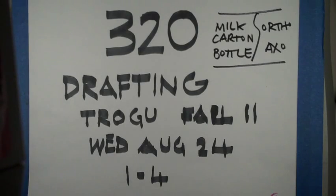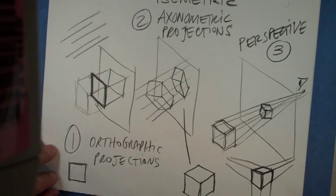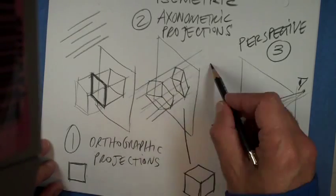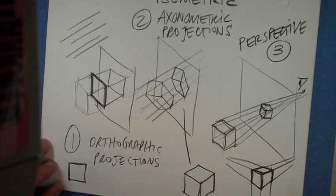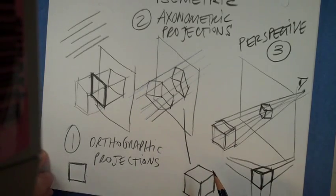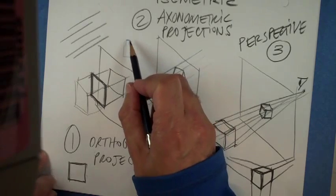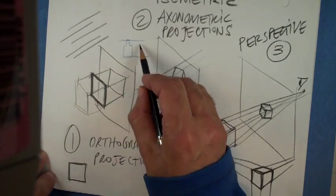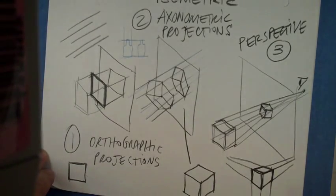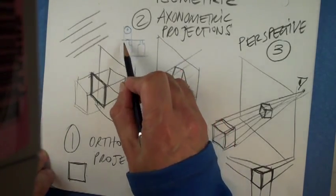Wednesday August 24th, and this is about the milk carton and the bottle in orthographic and axonometric. This sketch shows the relationship between these projections. By the way, these lines — what I'm calling the projection lines — you don't see them anymore in CAD, because CAD gives you the thing already. When we draw by hand they're really important because they allow you to derive another view by simply projecting those lines.